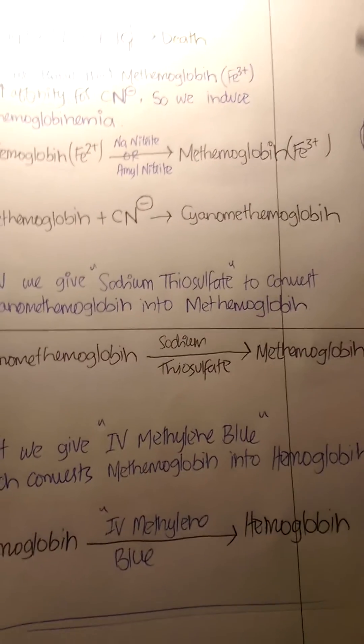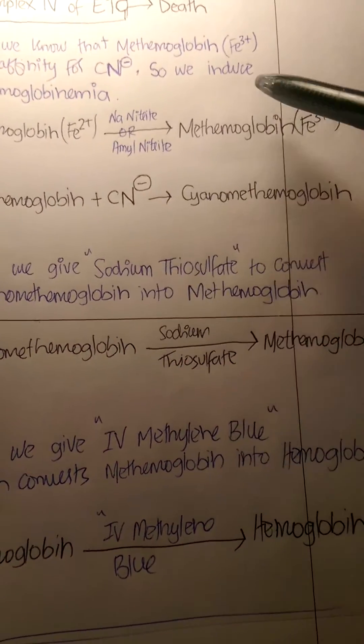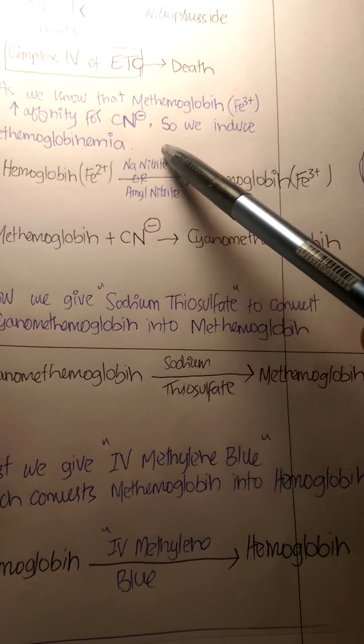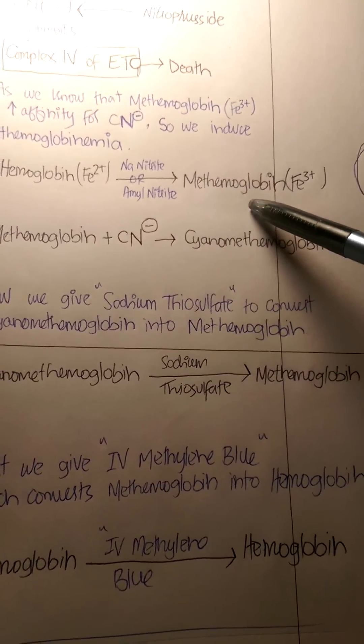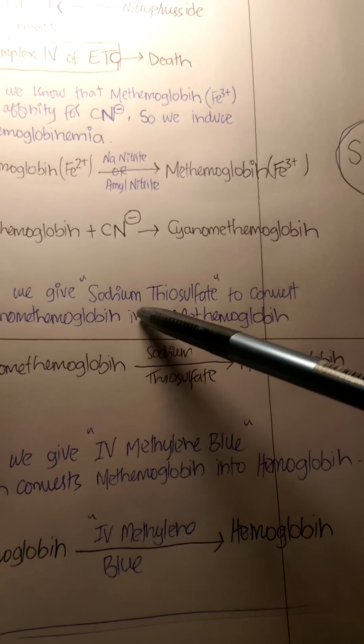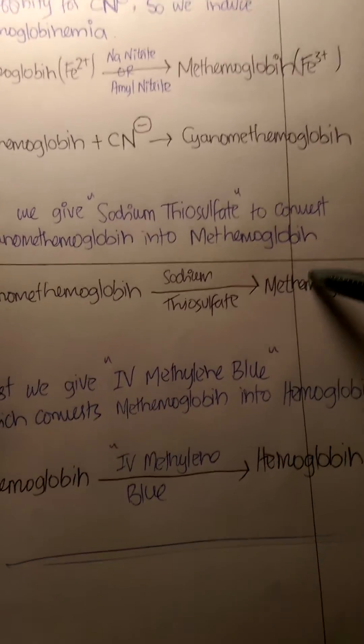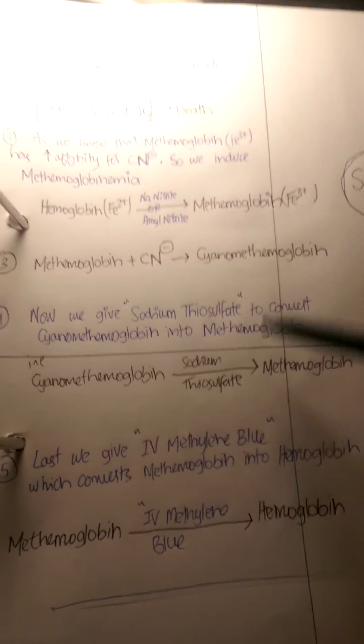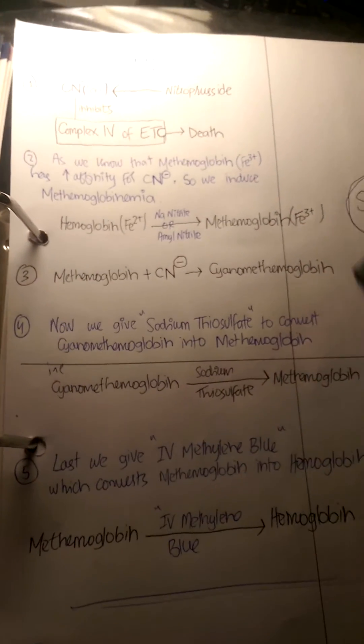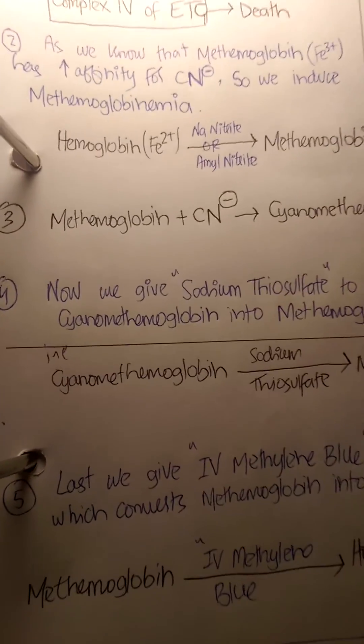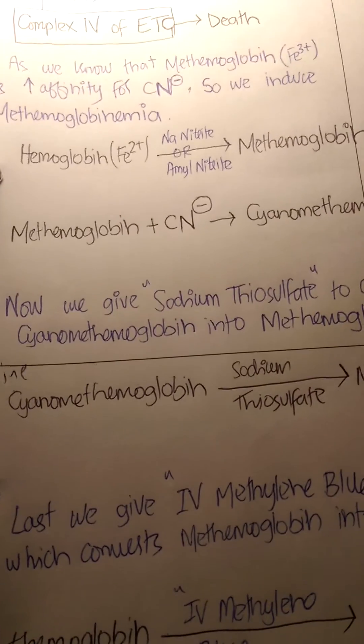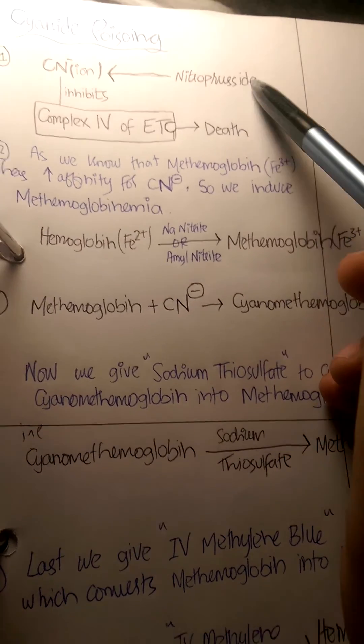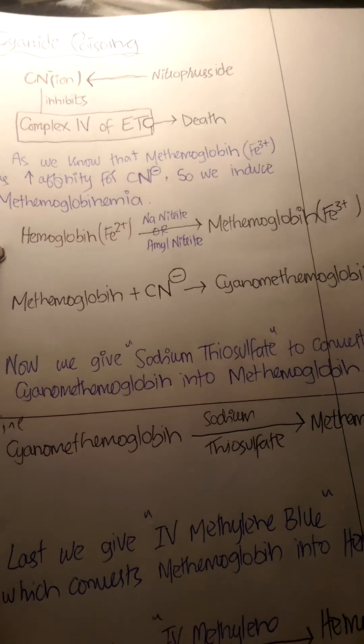In this whole process, we lose the cyanide ions by giving three drugs. First, we give nitrites to induce methemoglobinemia. Then we give sodium thiosulfate to remove cyanide and generate methemoglobin. Third, we convert that methemoglobin back into hemoglobin. This is the whole mantra you must remember for cyanide poisoning. I cannot stress enough that you must remember nitroprusside's ability to generate cyanide ions.